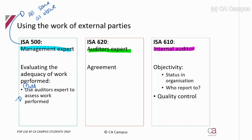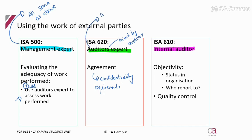For an auditor's expert, there is one additional consideration: you need to have a formal agreement with the expert, because the auditors are ultimately hiring this expert. In that agreement, there must be confidentiality requirements, since you've hired a third party to look at work given to you by management. Everything else still applies — you still assess objectivity, competence, their work, and understanding of their field of expertise — plus there must be an agreement in place between the auditors and the expert.